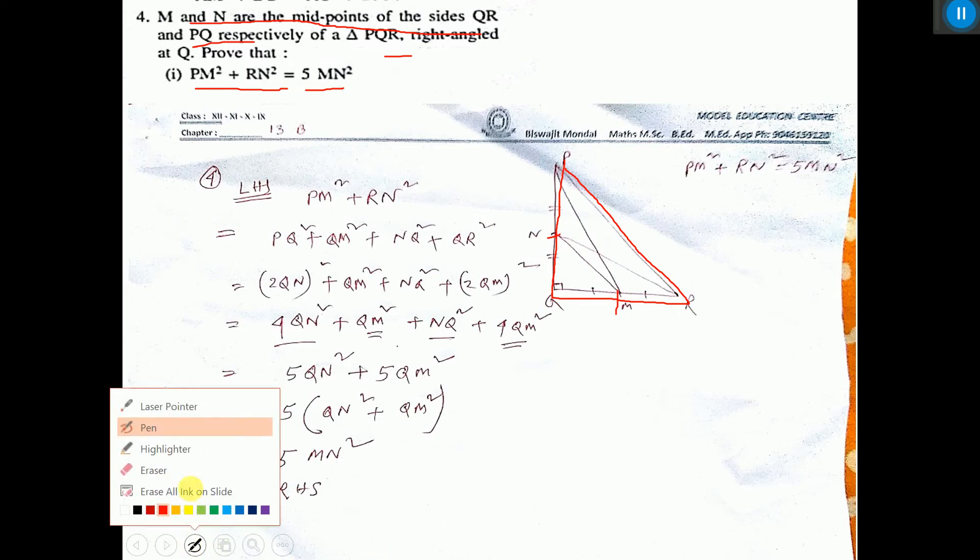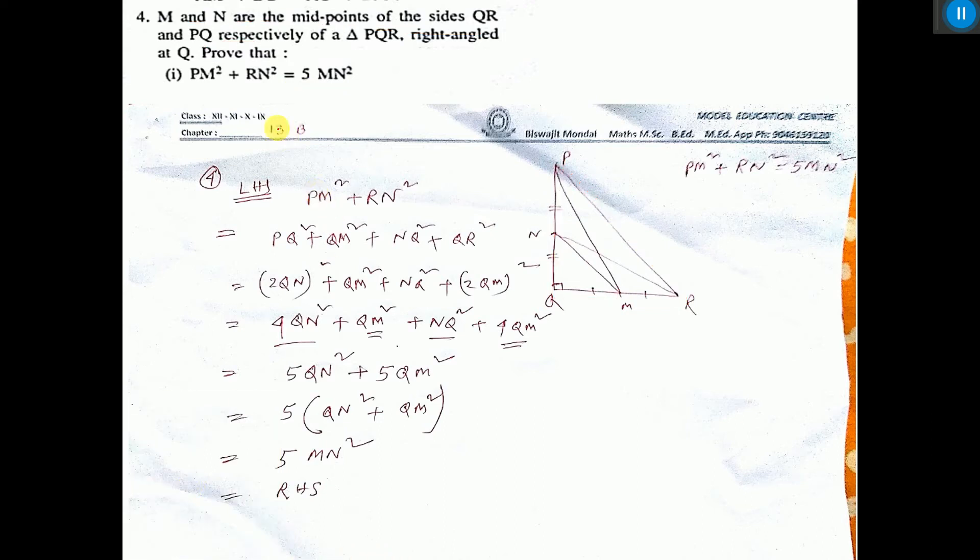See how we have done. Left hand side you take PM² + RN². PM means, see here, PM² means PQ² + QM². That is written.